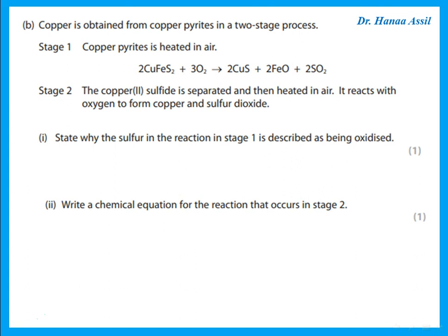Copper is obtained from copper pyrites in a two-stage process. In stage 1, the copper pyrites is heated in air — the equation is given. State why sulfur in stage 1 is described as being oxidized. Looking at the equation, I started with CuFeS₂ and ended up with SO₂, so the sulfur gained oxygen. That means the sulfur was oxidized.